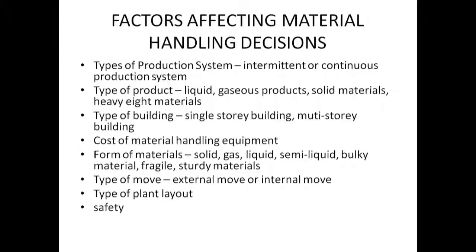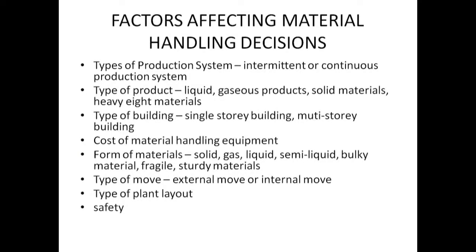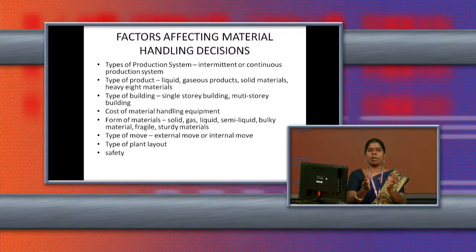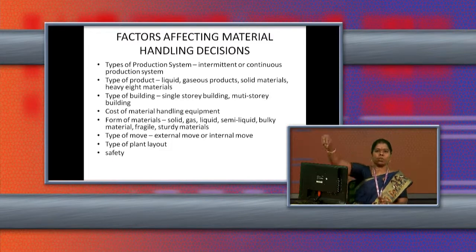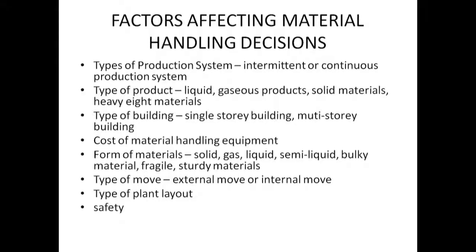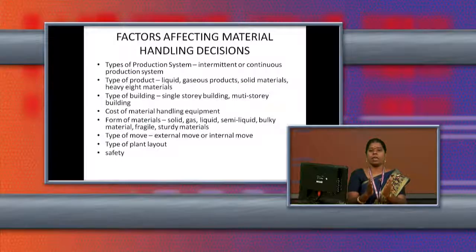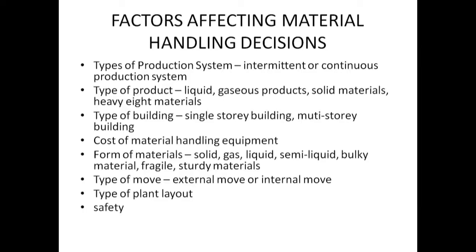The next factor is the forms of materials — solid form, gaseous form, liquid form, semi-liquid form. Semi-liquid materials are handled with the help of a closed container. For bulky materials, a crane can be used. Fragile materials have to be handled very carefully, so that type of handling equipment must be selected. Sturdy materials, such as semi-finished goods like doors and windows in a construction project, have to be carried in a different type of equipment.